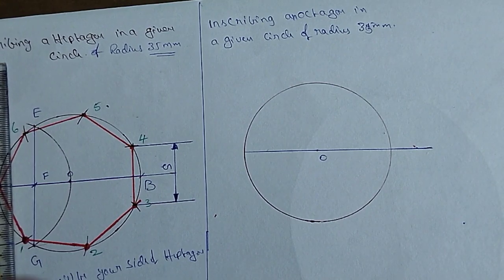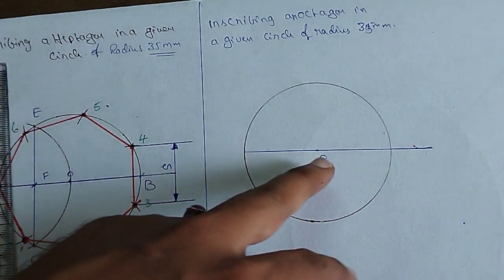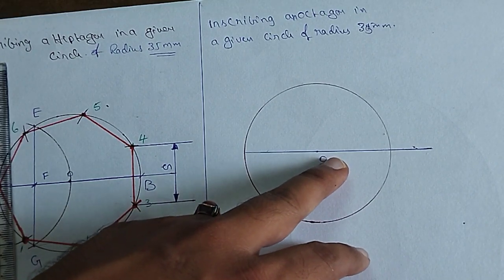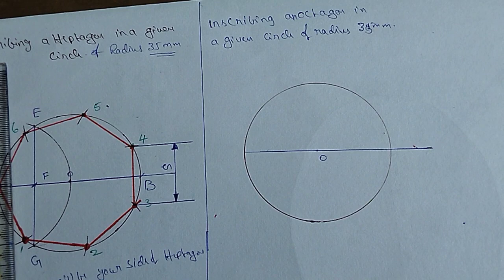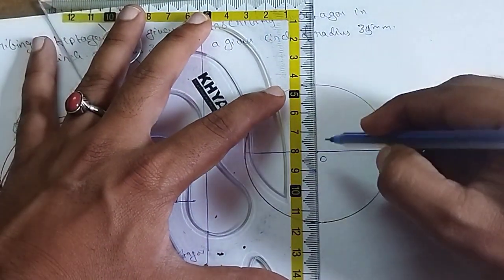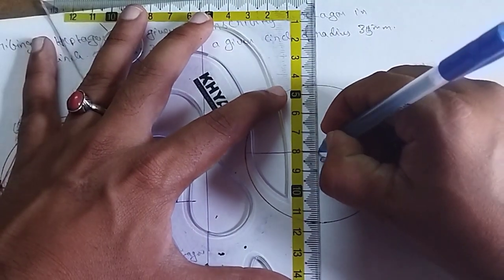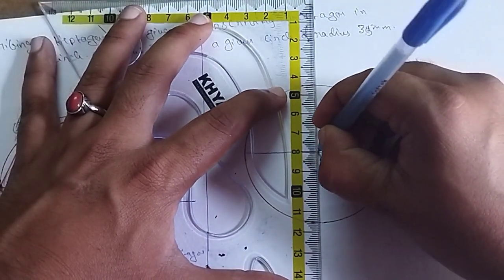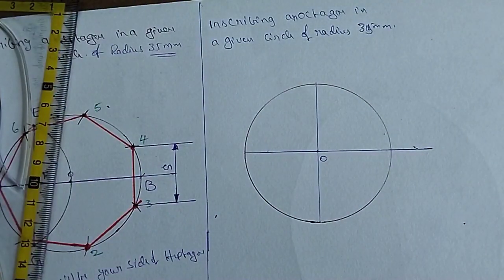We are going to draw two diameters — a horizontal diameter and another diameter of the circle — in the same direction, marking the circle.